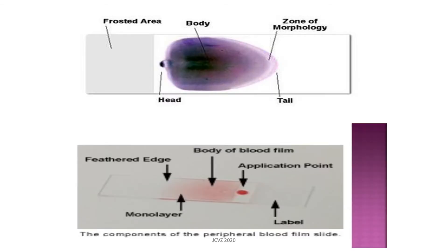In this figure, you can see the different parts of our blood smear. We have the head, which is the start of the smear, the body in the middle, and the tail at the very end. There is also the zone of morphology, which is the transition between the body and the tail. It is at the zone of morphology where we count and examine our different blood cells, because in this zone we can see an even distribution of cells and most of them do not overlap.